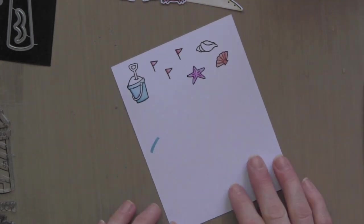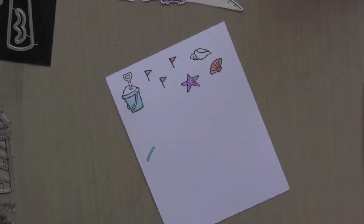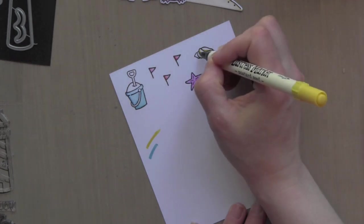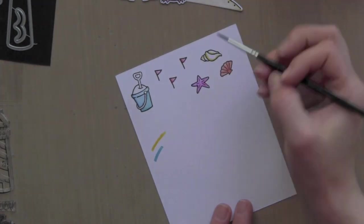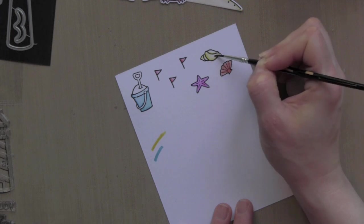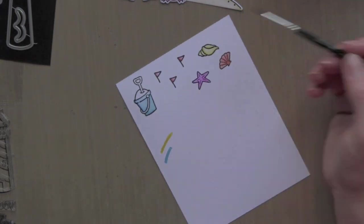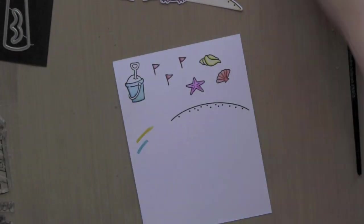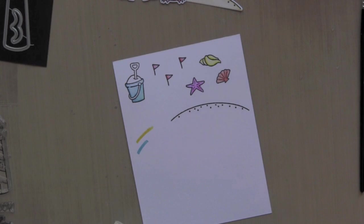I used ripe persimmon for the seashell, barn door for the flags, mustard seed for this shell here, and then I believe I used picked raspberry for the starfish. The exact colors will be listed in the supply list at the end of the video, below this video on YouTube and on my blog post.